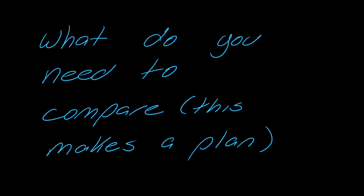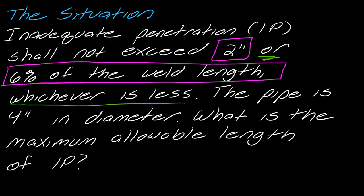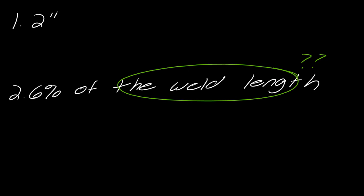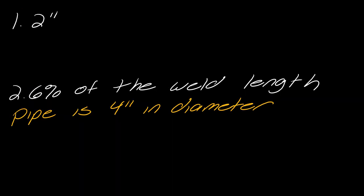When you see 'whichever is less,' you need to identify what to compare. Look for the word 'or' — it divides the two things: two inches versus six percent of the weld length. Now, the weld length will take extra work here. Rereading the problem: the pipe is four inches in diameter, so I need to find the circumference before I can even get to the comparison.